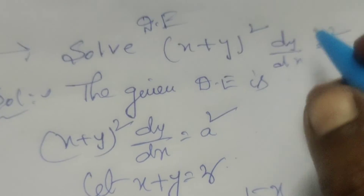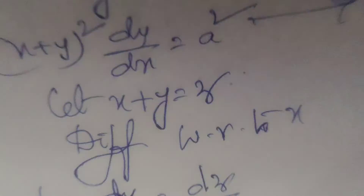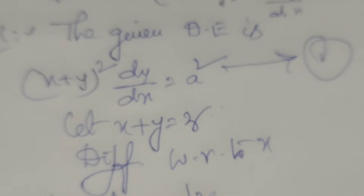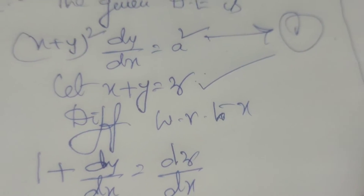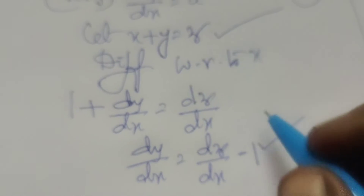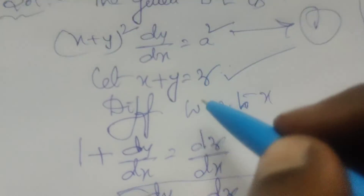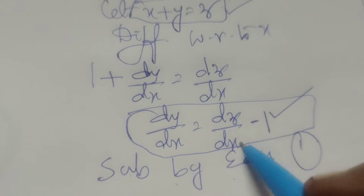Substitute these into equation 1. We have x + y = z, and dy/dx = dz/dx − 1. Now substitute into equation 1: in place of (x + y) write z, so z squared, and dy/dx becomes dz/dx − 1.